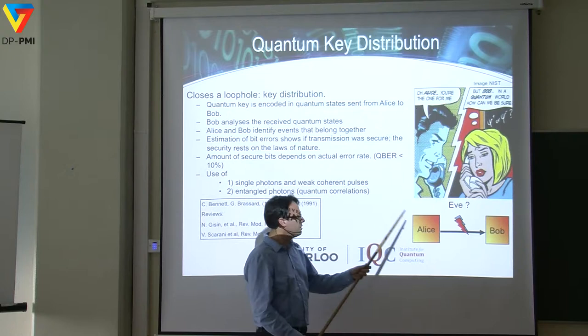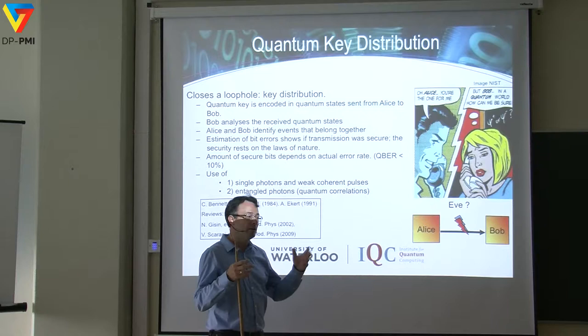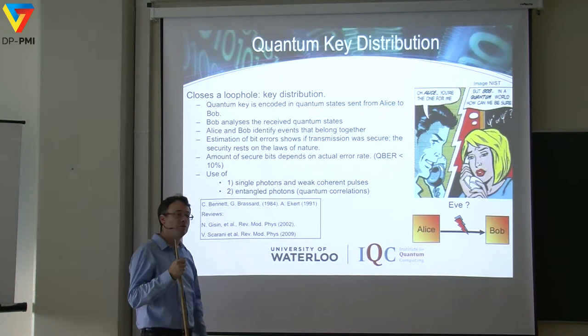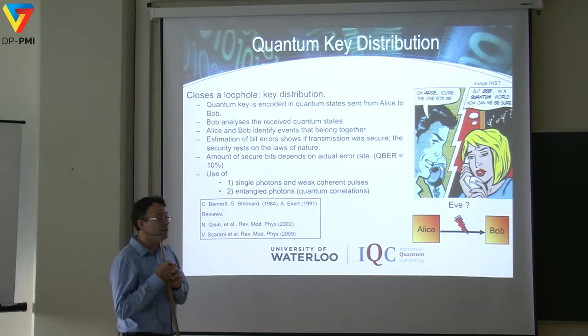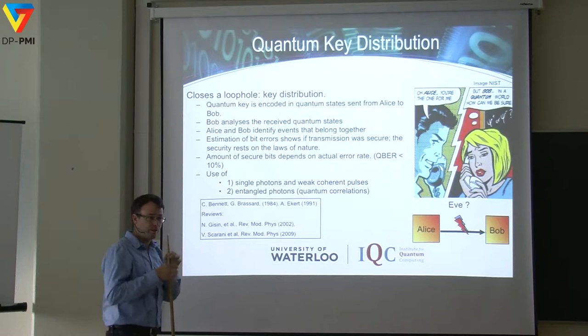After the transmission, Alice and Bob compare their data — they compare a subset of events and determine the error rate on the transmission. From the error rates, they can determine if there is secure information or not. The threshold for acceptable error is around 10%. This process started in 1984, and not much happened until the 1990s, when the field really gained momentum.